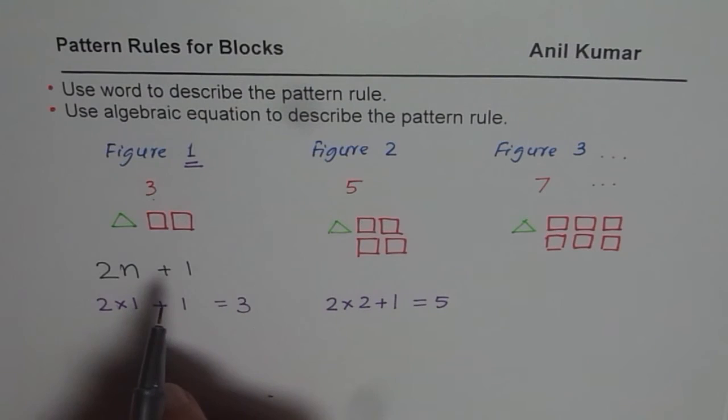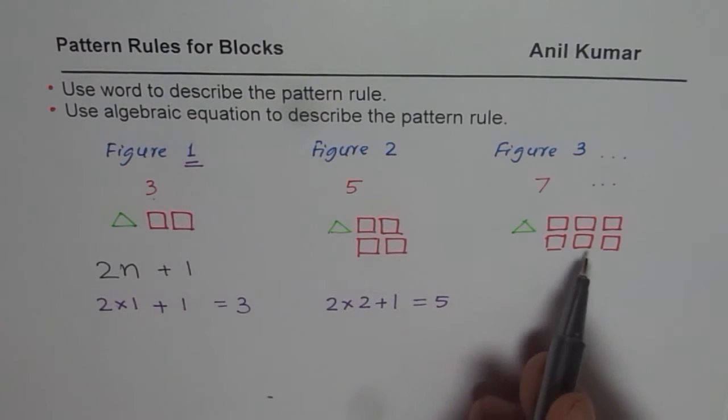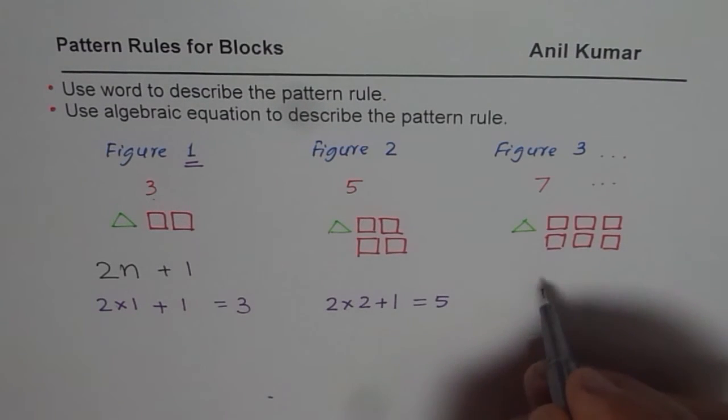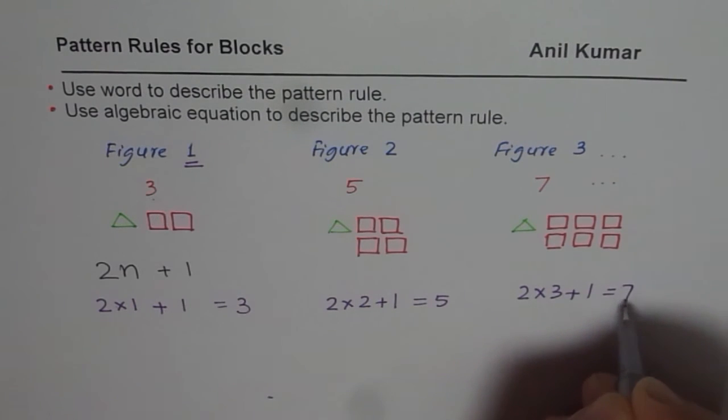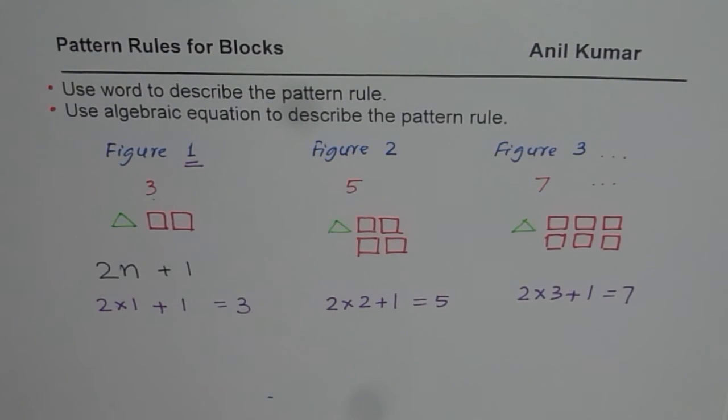So that expression, two n plus one represents the total number of blocks. Do you see that? Here, if I write three for n, I get two times three plus one. Two times three is six. Six plus one is seven. So I do get total number of blocks seven.